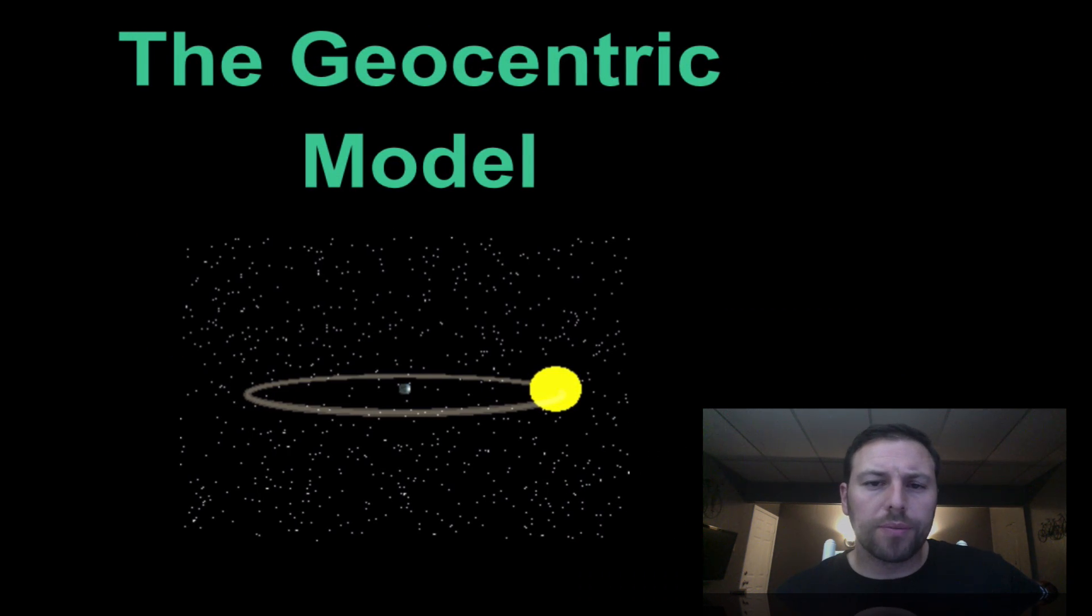Our solar system or basically everything in the nighttime sky or celestial sphere, there's been two models proposed how those objects move around us. We have the geocentric model which goes back a little bit, which is basically the earth-centered model. So Aristotle believed that the earth was in the center of space or the universe and everything revolved around it, like we see here.